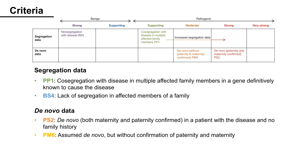Next, De Novo Data: PS2 can be assigned when the variant is de novo — both maternity and paternity confirmed — in a patient with the disease and no family history. PM6 is for assumed de novo variants, but without confirmation of paternity and maternity.